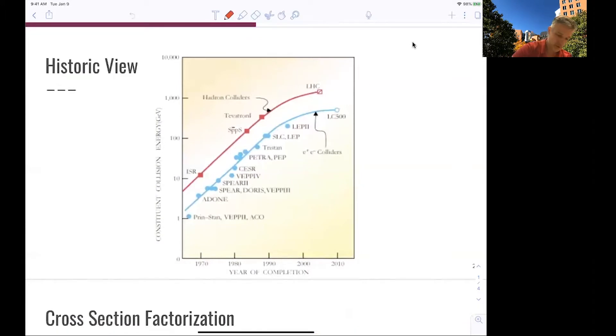This plot here shows as a function of the year the energy of the constituents, so these are the elementary particles used in the interaction, or the energy of the quarks and gluons being part of the interaction. And you see that typically we find